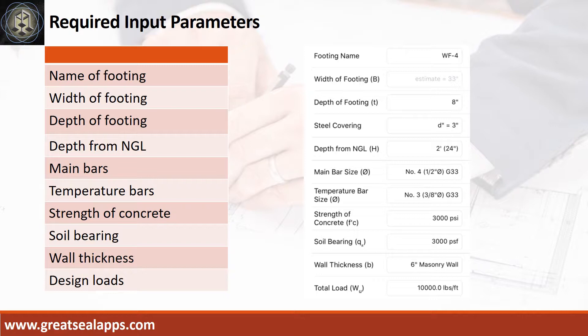Main bars, 1/2-inch diameter at grade 33. Temperature bars, 3/8-inch diameter at grade 33. Strength of concrete, 3,000 PSI. Soil bearing capacity, 3,000 PSF.